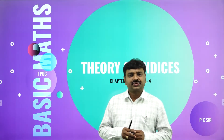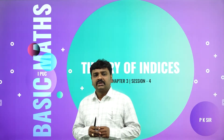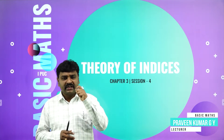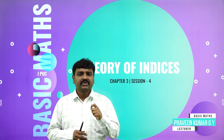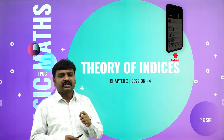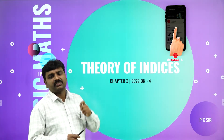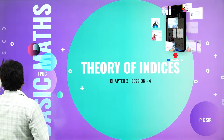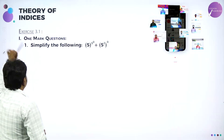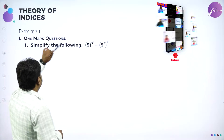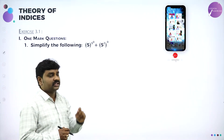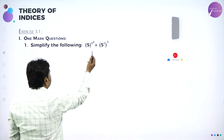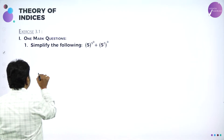Welcome to the session, dear students. We are going ahead with Theory of Indices. We start with exercise problems — Exercise 3.1, third chapter, first exercise. They are asking you to simplify these; they are all simple one-markers.